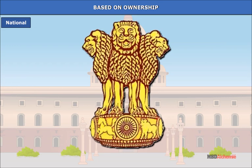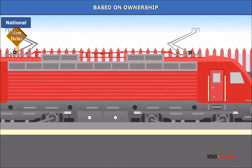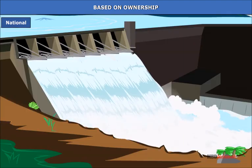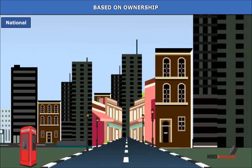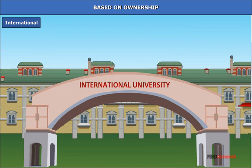Even today, the government owns resources of general public use such as railways, irrigation canals, roads and buildings. International resources are owned by international institutions like the United Nations or other regional international organizations.